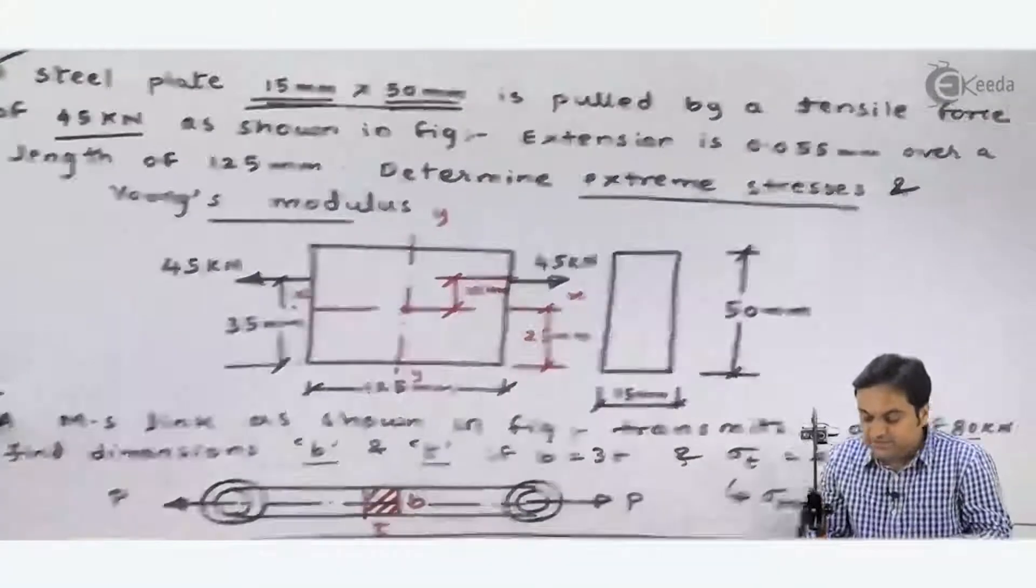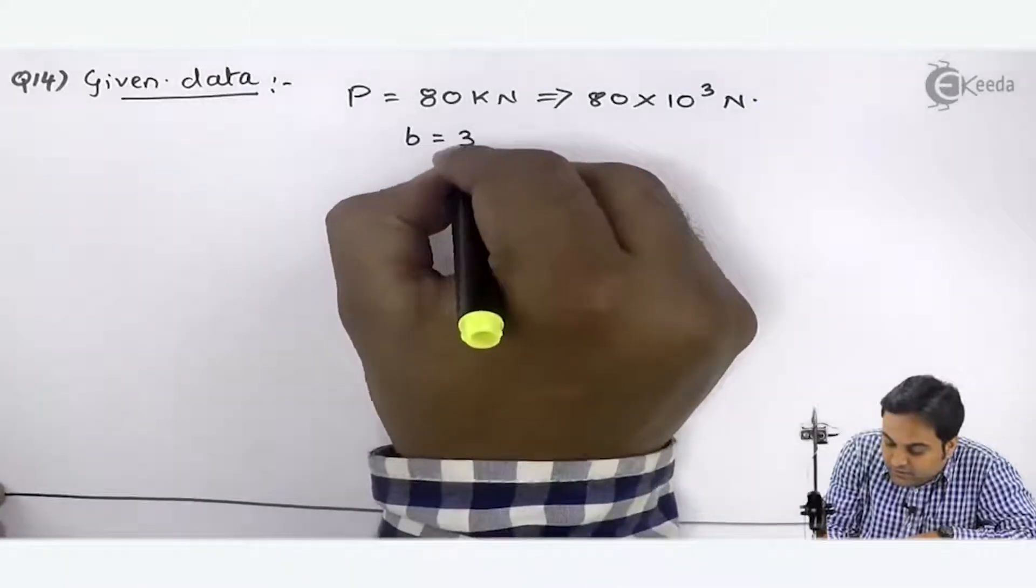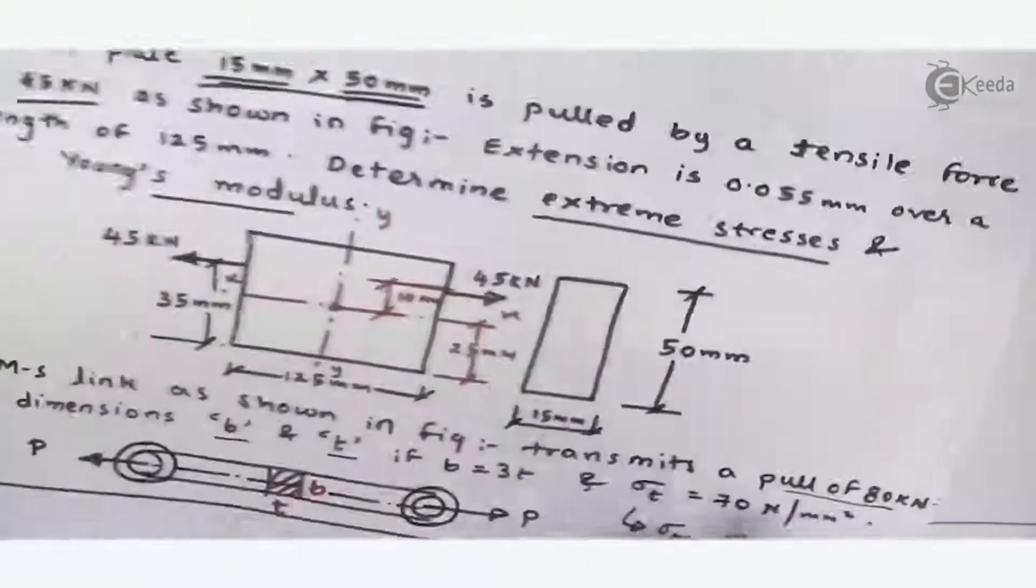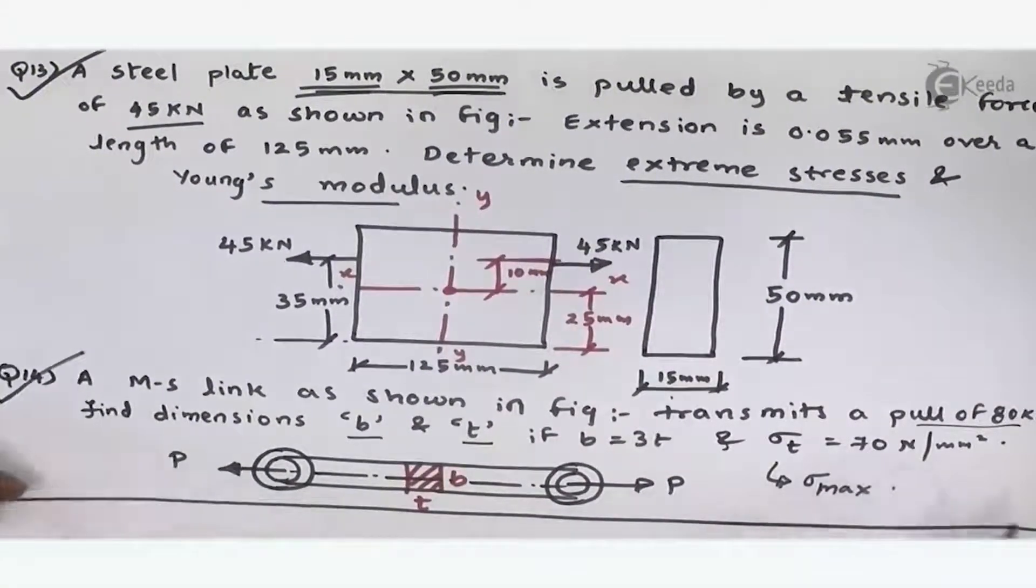If B is 3T, means width is equal to thrice of thickness, given. And sigma T—we can call it sigma max—that is 70.